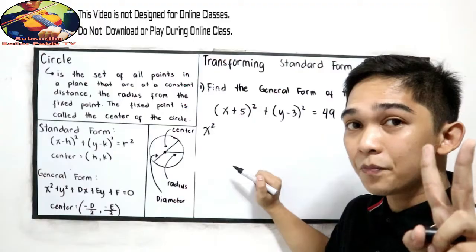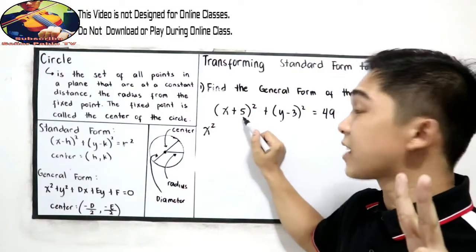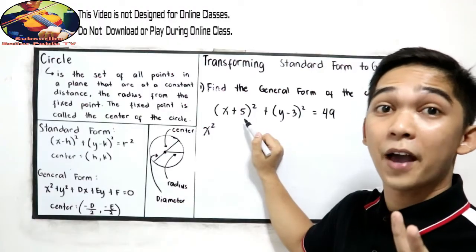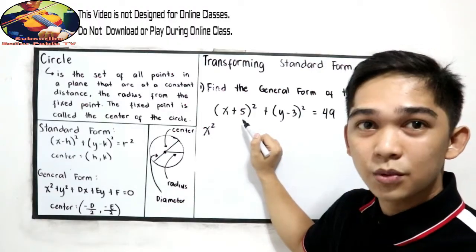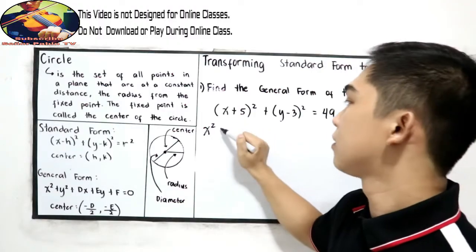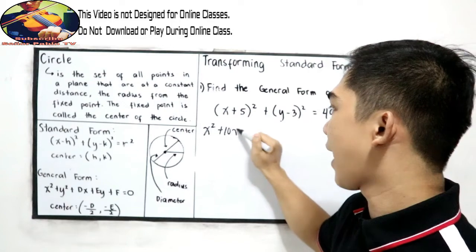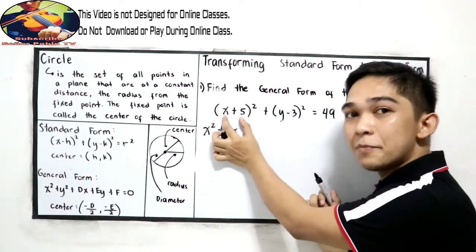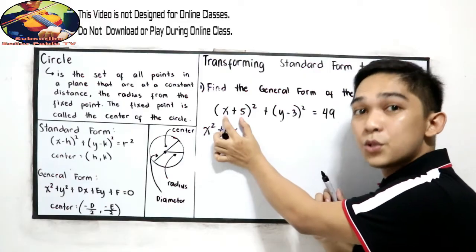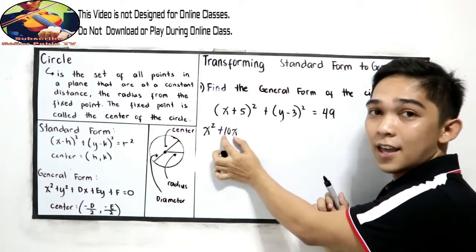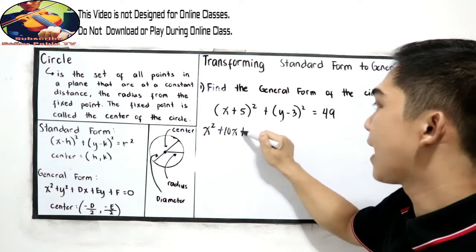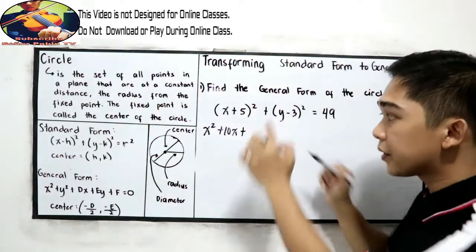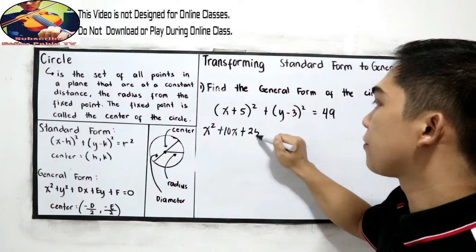Second step: multiply the first and second terms. So x times 5 is 5x, times 2, that is 10x. Again, multiply the first and second term times 2 — that's why we have 10x. Plus, square the second term: 5 squared gives us 25.